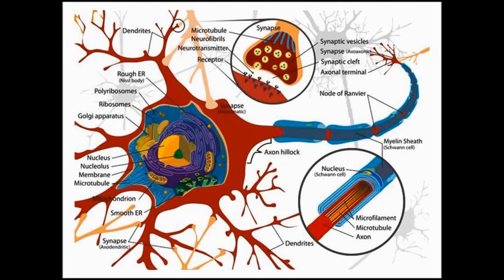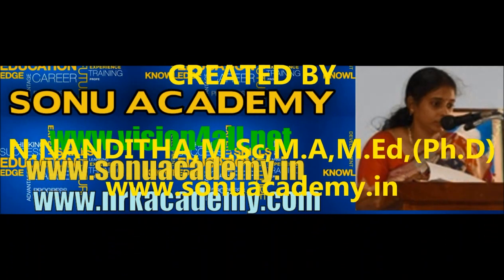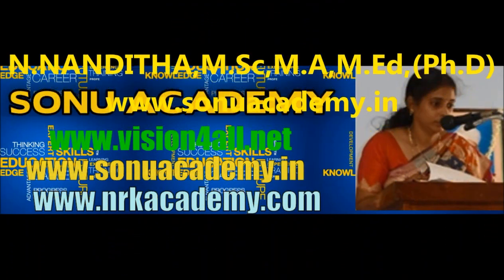Points to remember in this lesson: nerve tissue has neurons, and supporting cells are called glial cells. In each tissue, all the cells have similar structure and functions, and these cells are packed in extracellular matrix. Thank you. This is Nanduram and we are from SONU Academy.